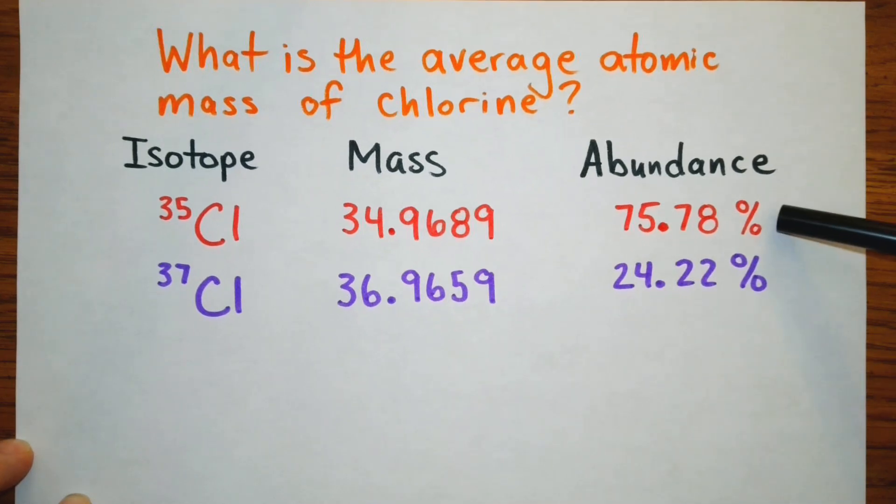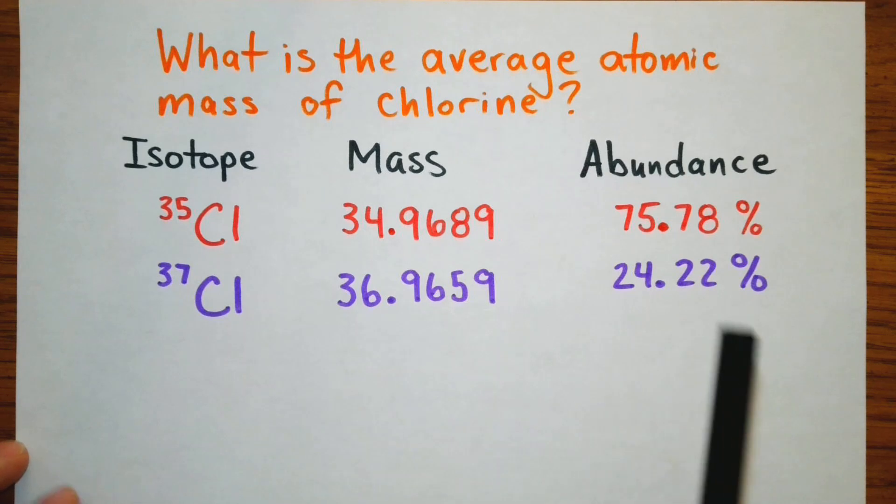And so the relative abundance we're going to convert that into the decimal form of the percent. Just move the decimal place to the left two spots. Now once we have that information you can look that up on a chart.